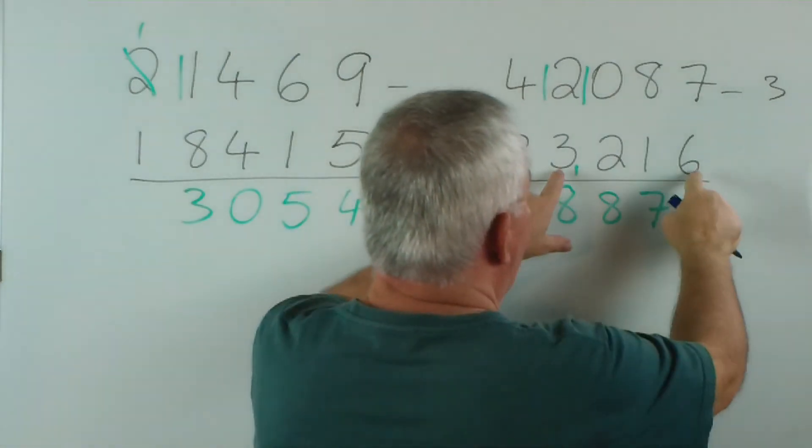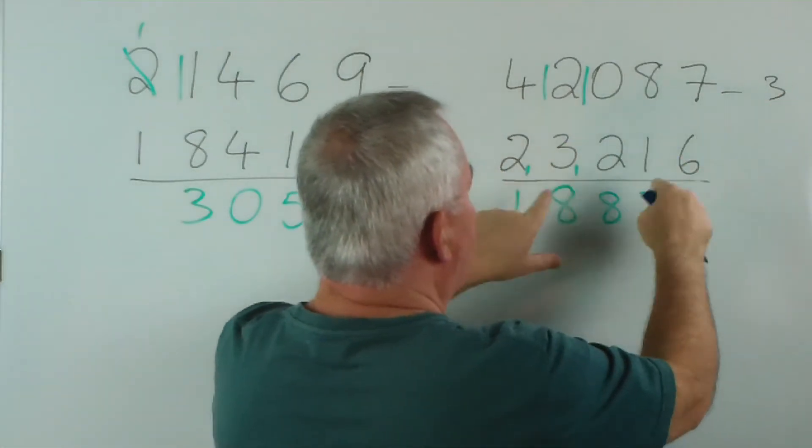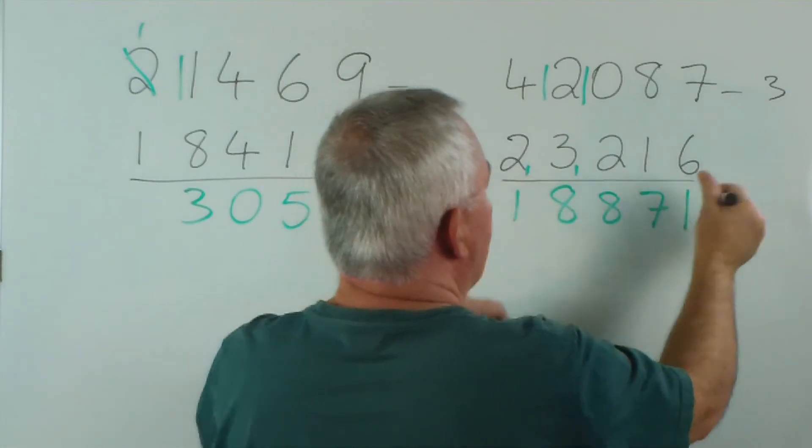What have I got here? 6 and 3 is 9, so they go out, and I'm left with 2 plus 2 plus 1 is 5.